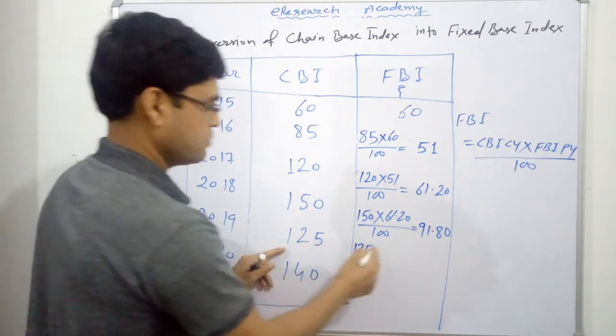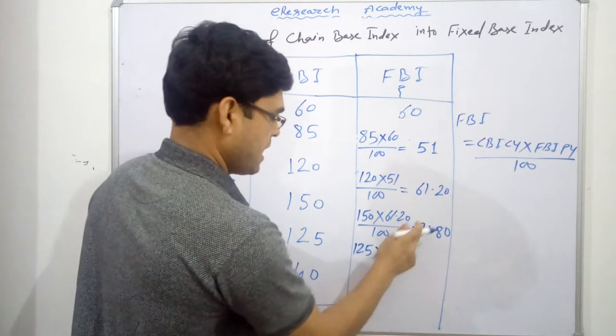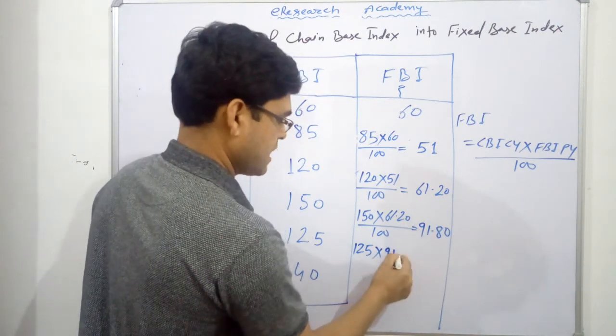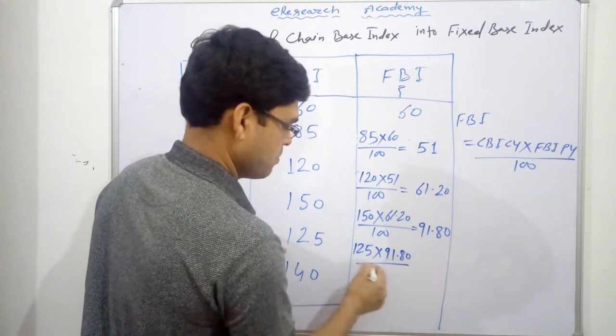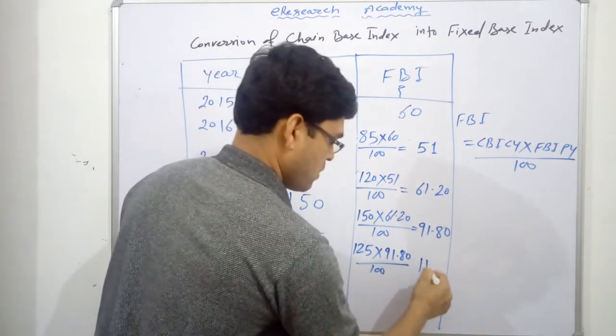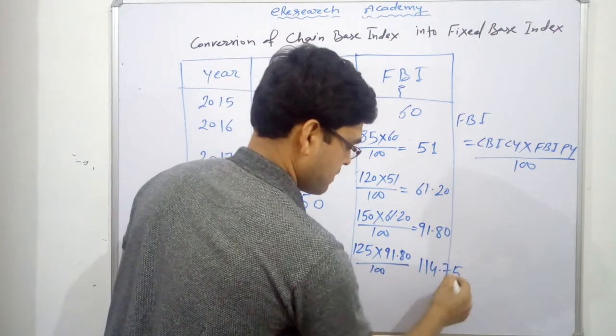Then 125, CBI of current year is 125, into FBI of previous year, previous year for this one is 91.80, by 100. This is 114.75.